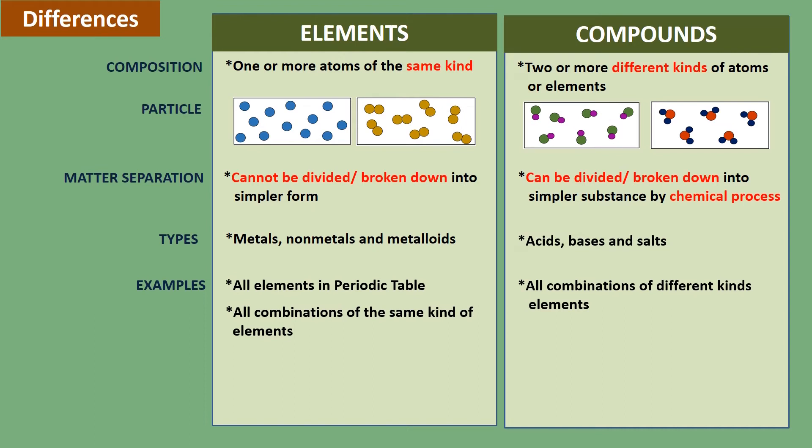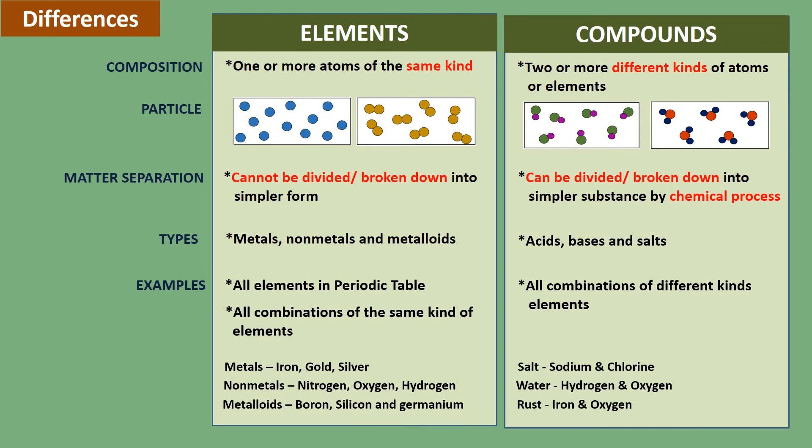Specifically, the examples of elements which are metals are iron, gold, and silver. Nonmetals are nitrogen, oxygen, and hydrogen. Metalloids are boron, silicon, and germanium. The specific examples of compounds are salt, which is a combination of sodium and chlorine, water which is a byproduct of hydrogen and oxygen, and rust which is formed when iron reacts with oxygen.